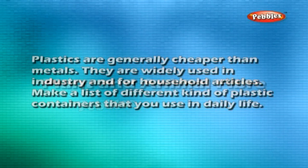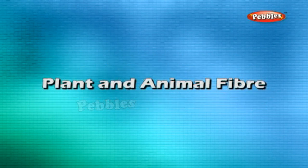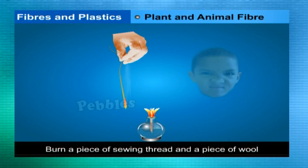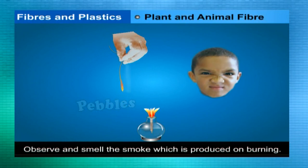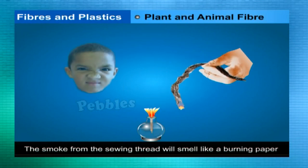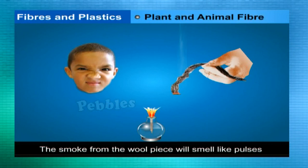Experiment — plant fiber vs. animal fiber: burn a piece of sewing thread (plant fiber) and a piece of wool (animal fiber). Observe and smell the smoke produced. The smoke from the sewing thread will smell like burning paper because it is made up of cellulose. The smoke from wool will smell like burning eggs or pulses because it is made up of proteins.